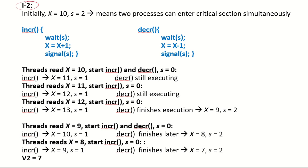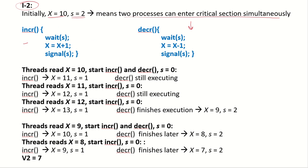Now consider Implementation 2 where x is initially 10 and the semaphore s is initialized to 2. This means two processes can enter the critical section simultaneously. If one thread executes wait(s), s becomes 1. Since s is still 1, another thread can also enter increment or decrement, making s become 0. Only then can no other thread enter. So s = 2 allows two processes to be in the critical section at the same time.